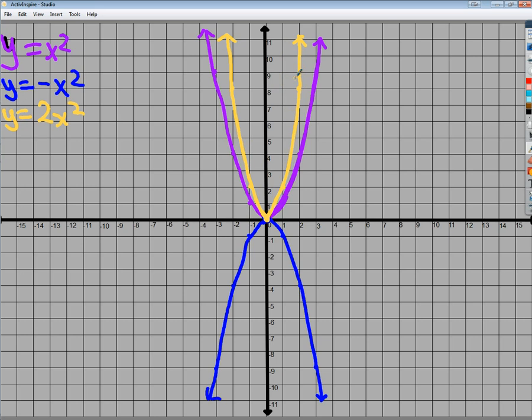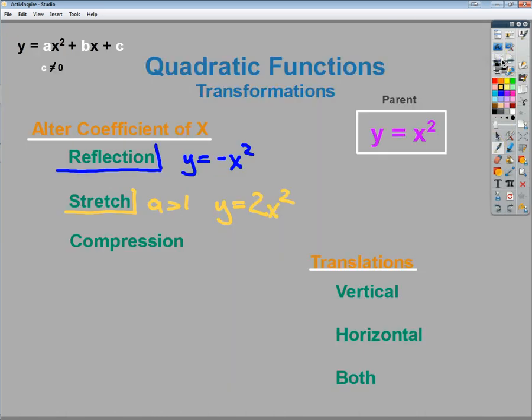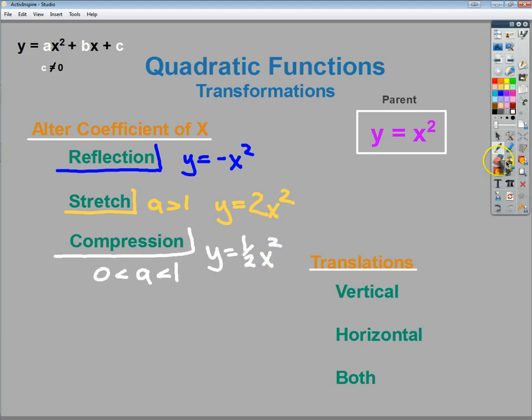The other type that we might want to deal with is the balance to stretching, which would be a compression. Now a compression is when my A value falls somewhere between 0 and 1. So we're going to do y equals 1/4 x squared. It's a more dramatic statement. If instead of doing 1/2, I do y equals 1/4 x squared, it's not as bold of a statement as 1/4 is.